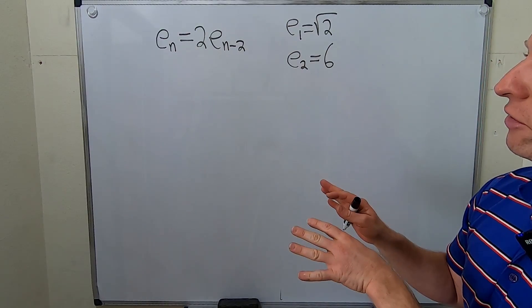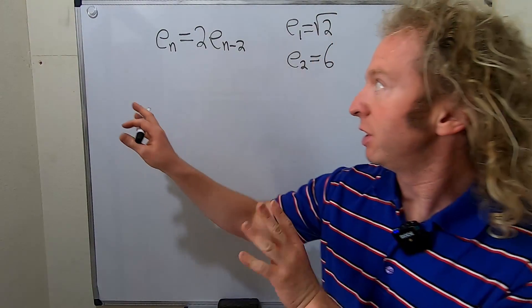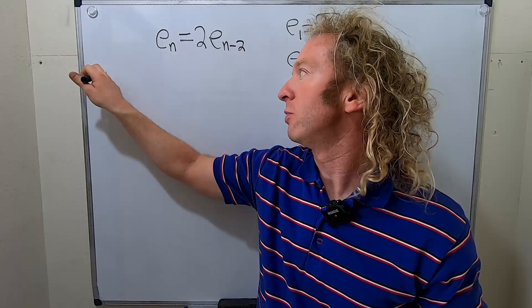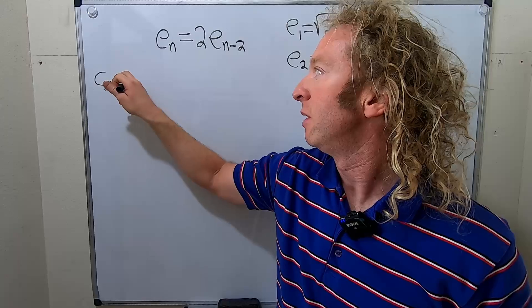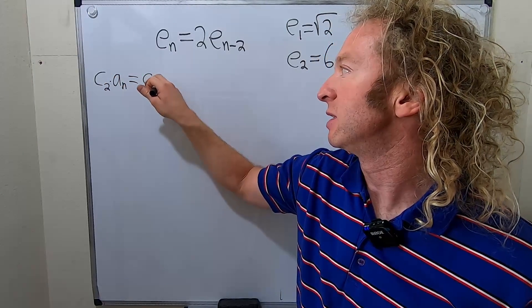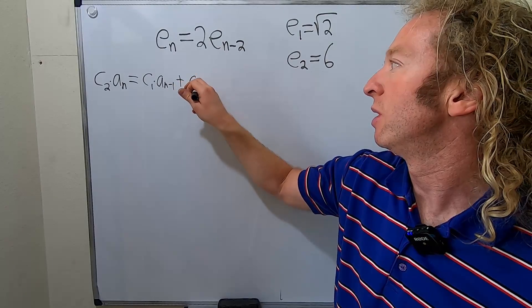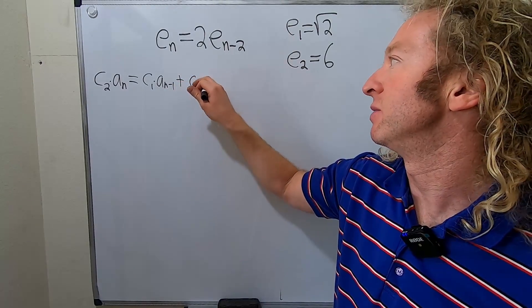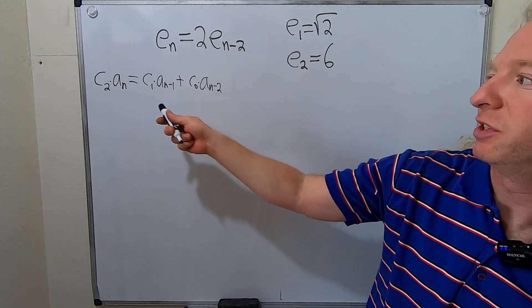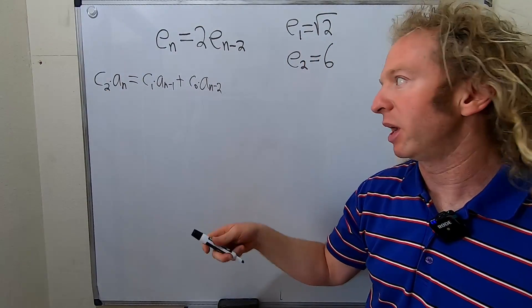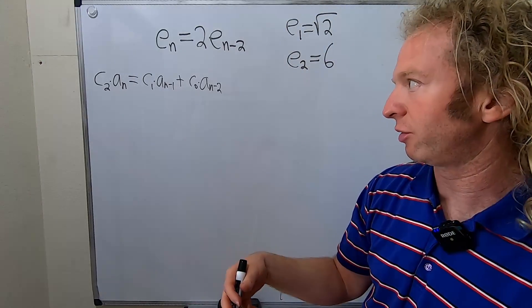Okay, so in order to solve this, you have to know some stuff about recurrence relations. So in general, say you have c2 times a sub n equals c1 times a sub n minus 1 plus c0 times a sub n minus 2. Say you have something like this, right? These are constants here, c2, c1, and c0 are numbers. If you have something like this, you can create what's called the characteristic or auxiliary equation.